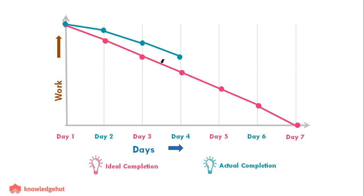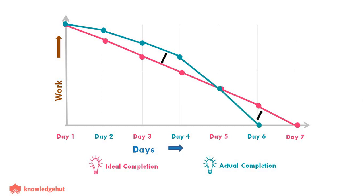If more work is remaining than what was expected, then it is time to buckle up and increase the efforts. If less work is remaining than what was expected, then you are probably going to finish all the tasks earlier than expected. You must have overestimated the required efforts and you should do proper estimation for the next time. So, this was all about the Sprint Burn Down Chart.